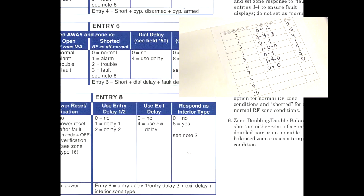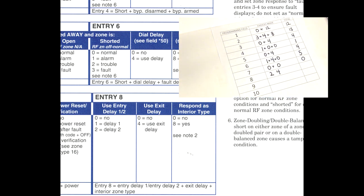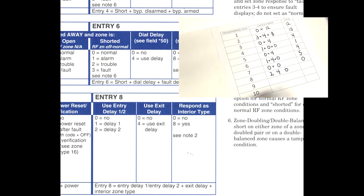Moving to field eight. Use entry delay one or two — we want to use entry delay two for this zone because we set up a custom delay for the garage door, so enter in a two. Use exit delay — yes, we want the exit delay for this zone, so enter in a four. Respond as an interior type zone — we do not want that, so enter in a zero. Two plus four plus zero gives us a total of six for field eight.